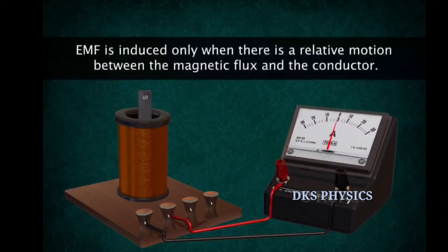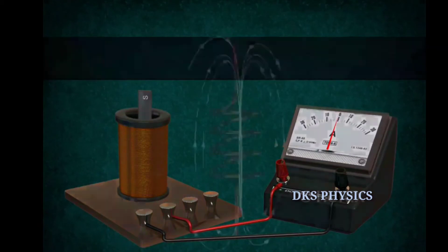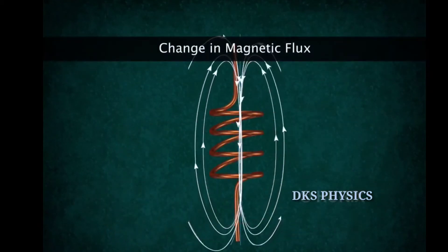EMF is induced only when there is relative movement between the magnetic flux and the conductor. Faraday concluded that a current was induced in the coil owing to a change in the magnetic flux passing through the solenoid.